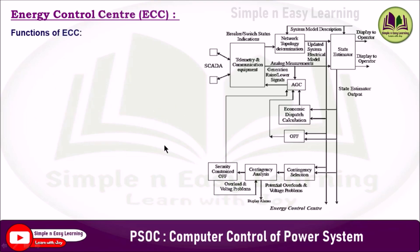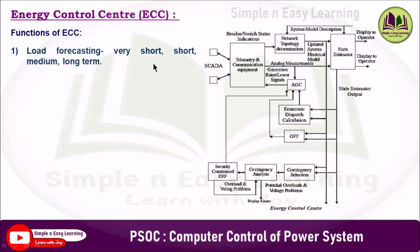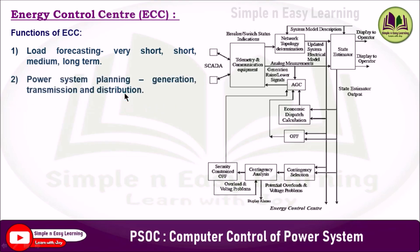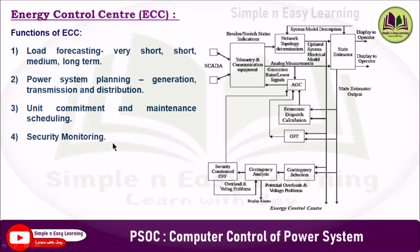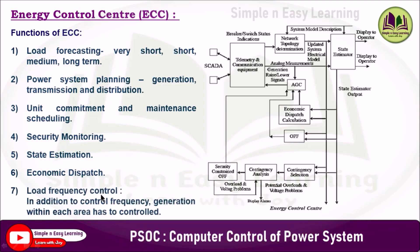The functions of the ECC include: first, load forecasting — very short-term (hourly basis), short-term (weekly), medium-term (monthly), and long-term (yearly). Second, power system planning covering generation, transmission, and distribution. Third, unit commitment and maintenance scheduling. Fourth, security monitoring. Fifth, state estimation. Sixth, economic dispatch. Seventh, load frequency control — in addition to controlling frequency, generation within each area has to be controlled.